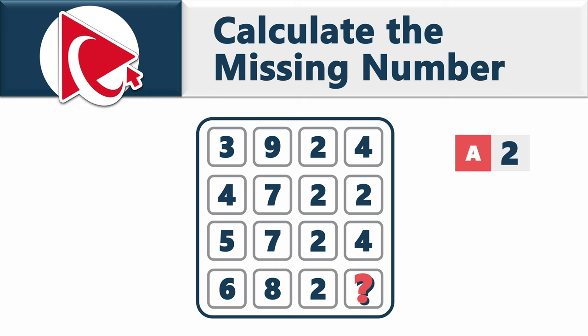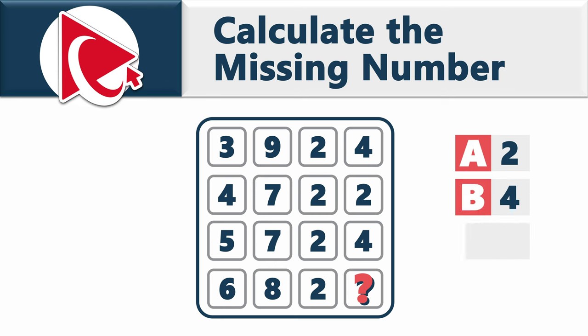You need to calculate and select the missing number out of four possible choices: Choice A: 2, Choice B: 4, Choice C: 6, and Choice D: 8.